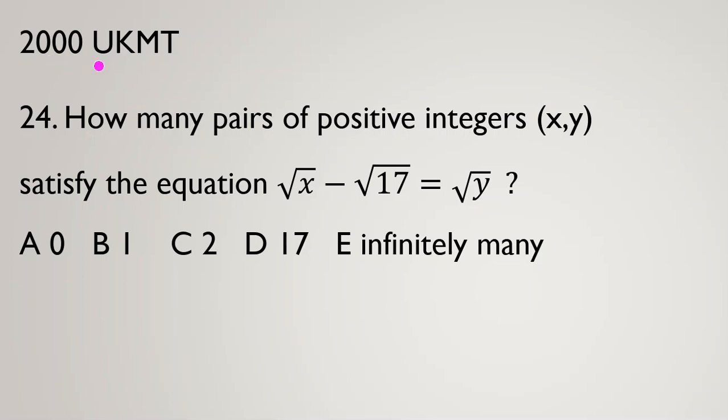2000 UKMT, United Kingdom Mathematics Trust, before BMO. Problem number 24: How many pairs of positive integers x and y satisfy the equation √x - √17 = √y? The options are 0, 1, 2, 17, or infinitely many. Before solving the problem, please don't forget to subscribe, turn on notification, and like the video. Let's start.